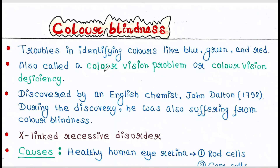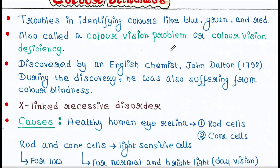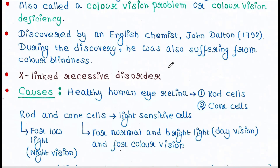Colorblind persons face difficulties identifying colors like blue, green, and red. Colorblindness is also called a color vision problem or color vision deficiency. It was discovered by an English chemist John Dalton in 1798. During the discovery, he was also suffering from colorblindness himself.